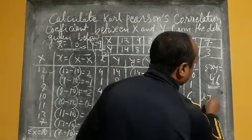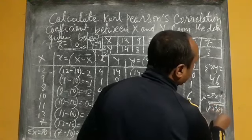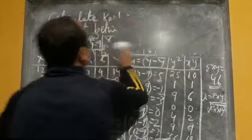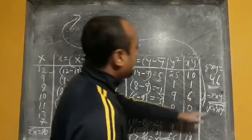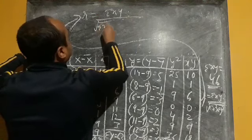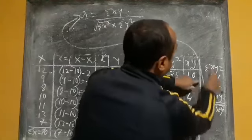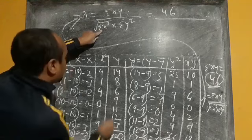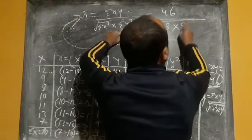Now we apply the formula: r equals summation xy divided by the square root of summation x-squared into summation y-squared. Substituting: r = 46 divided by square root of 28 × 84. Multiplying 28 × 84 gives 2352, and the square root of 2352 is approximately 48.5.